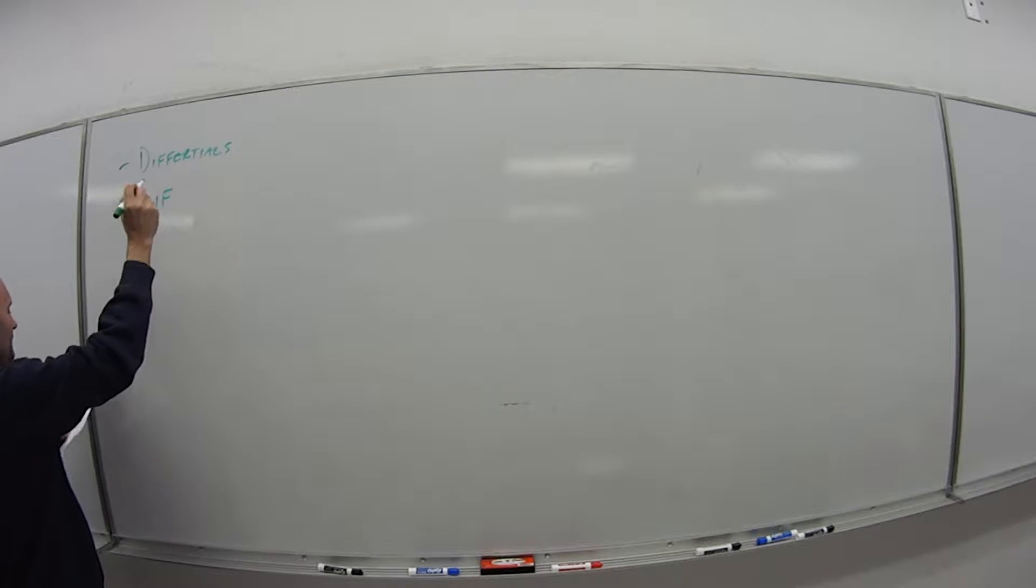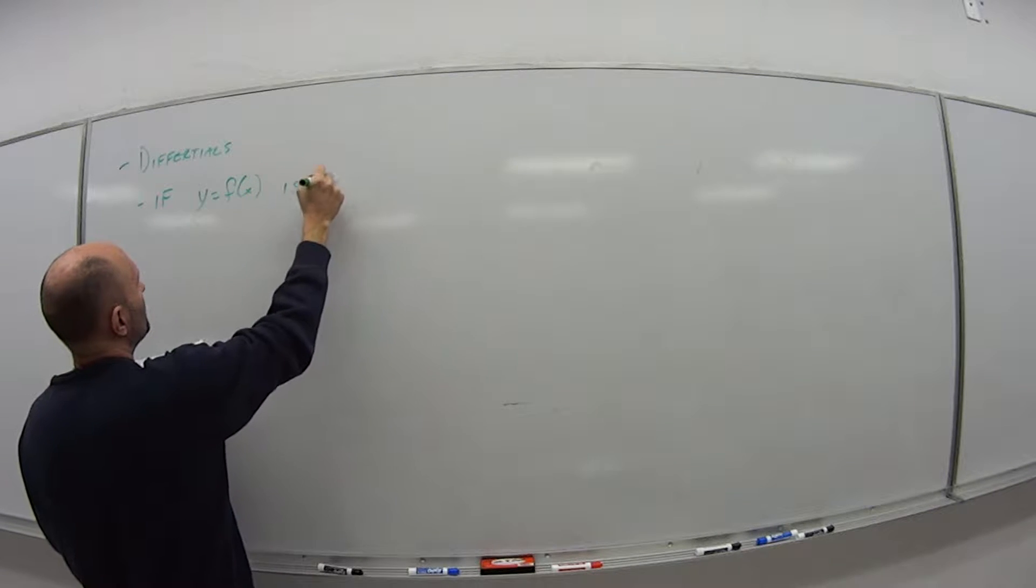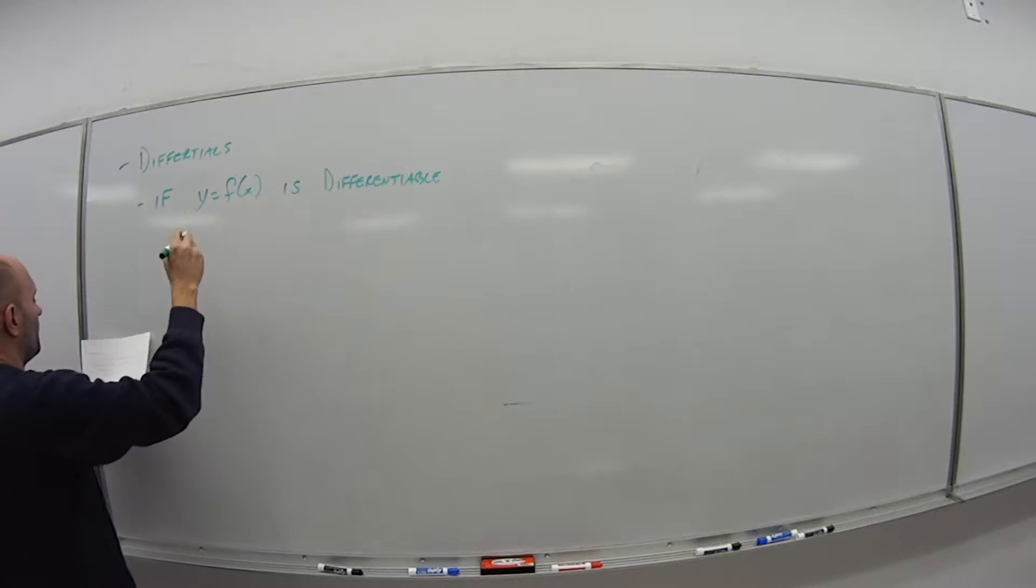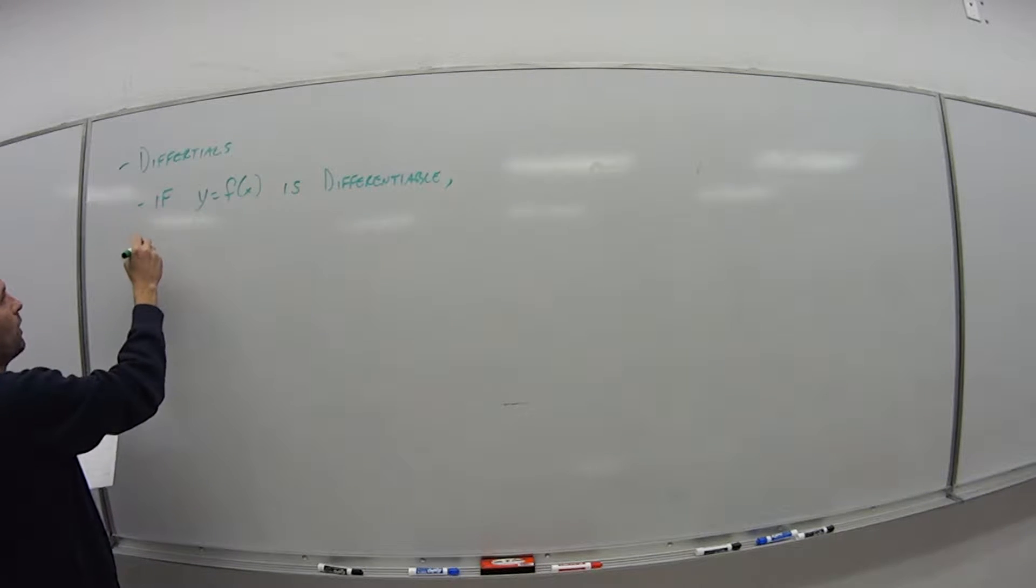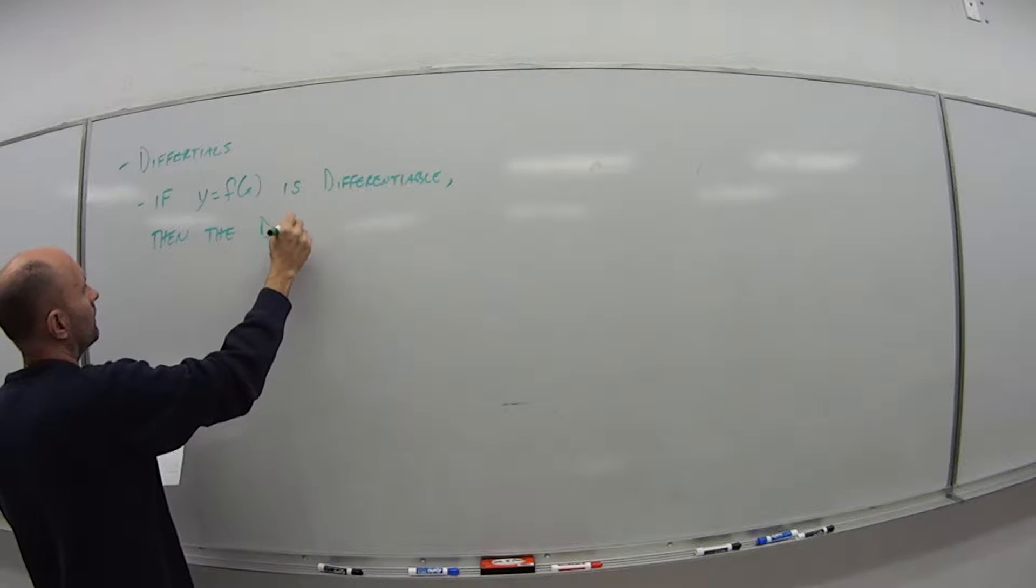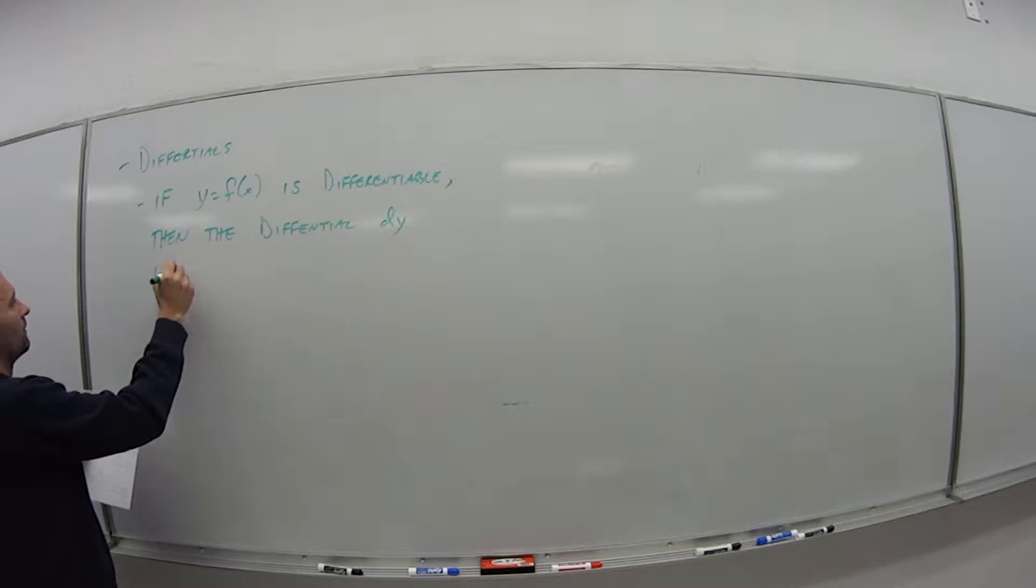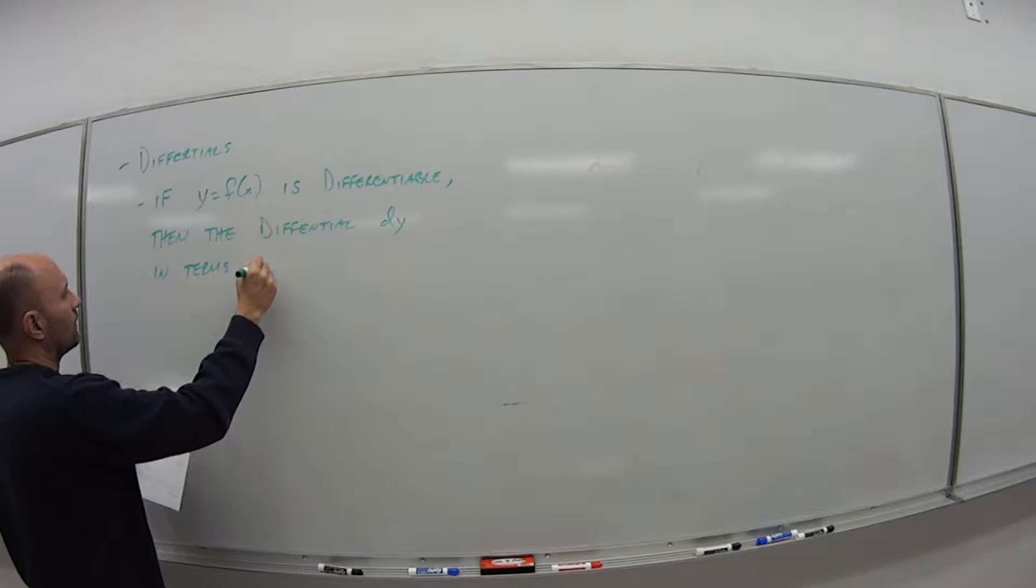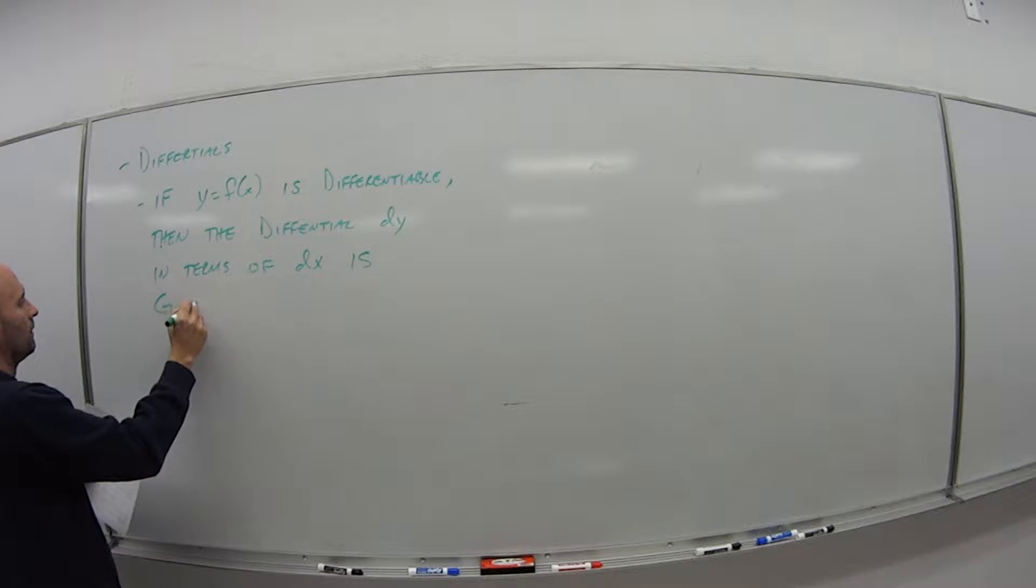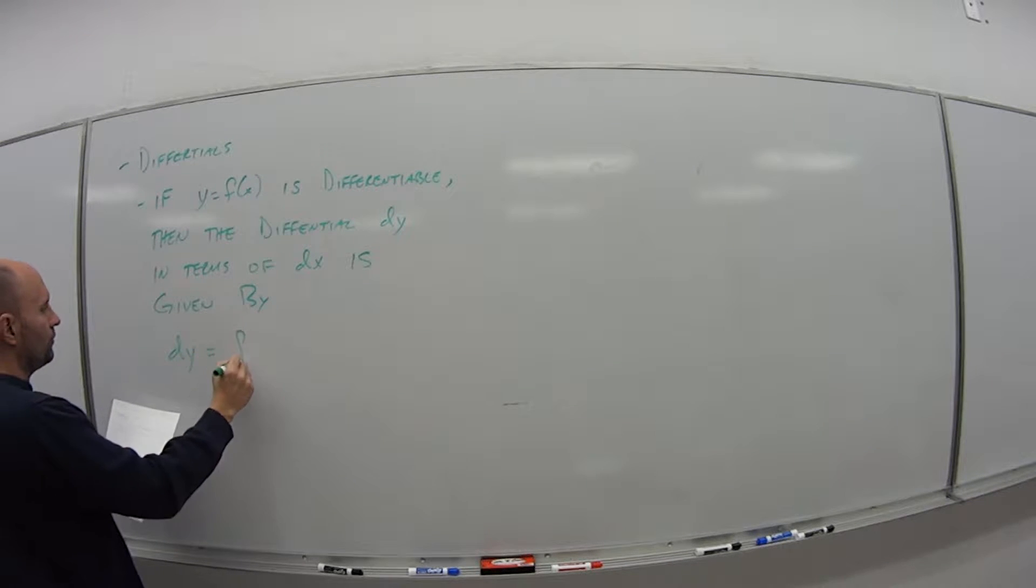It says the following: If y is equal to some function f of x, if that function is differentiable, then the differential dy in terms of dx is given by the equation dy is equal to f prime of x dx.